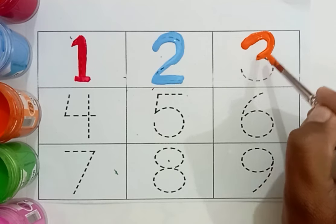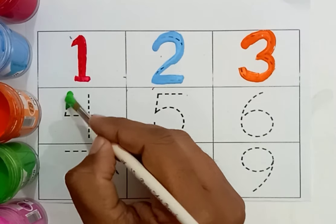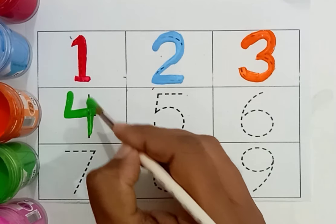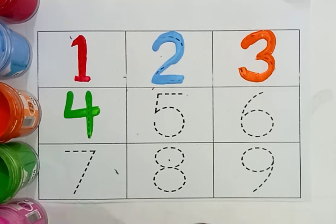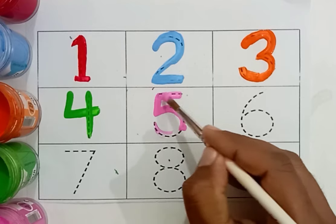What number is this? Three. Green color. Four. Which number is this? Four. Pink color. Five. Which number is this? Five.